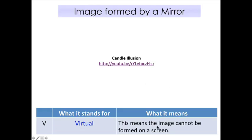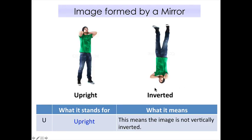Virtual means the image cannot be formed on a screen. Next: the image formed in a mirror is upright — the opposite of inverted. If you stand in front of the mirror, your head is still on top and your legs are at the bottom. Upright means the image is not vertically inverted.